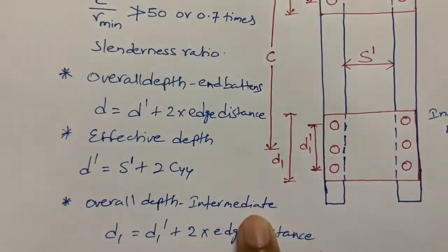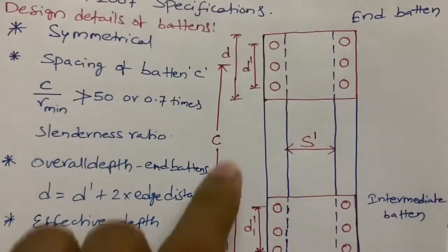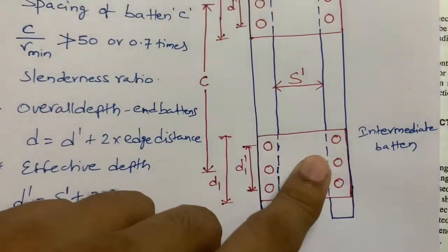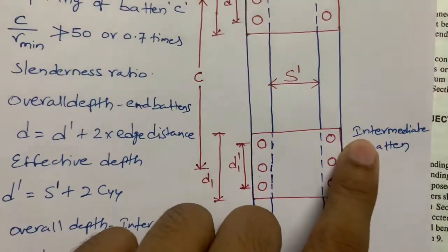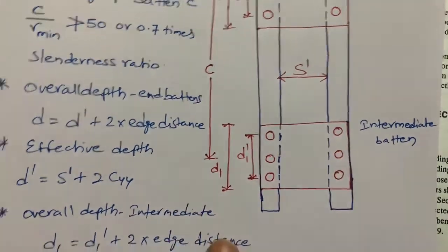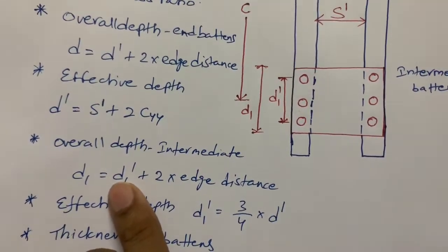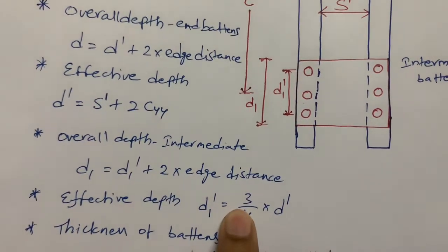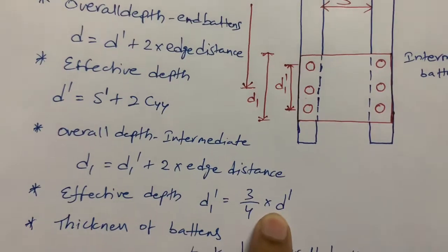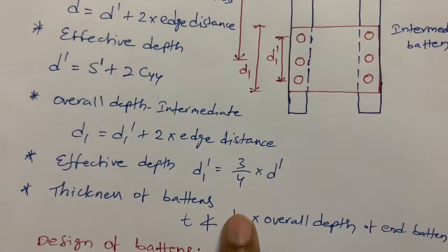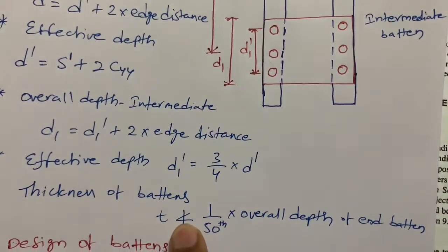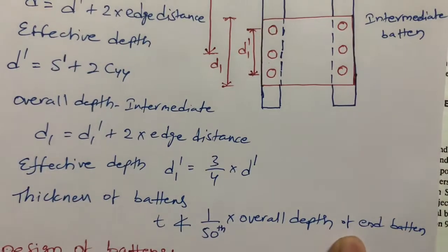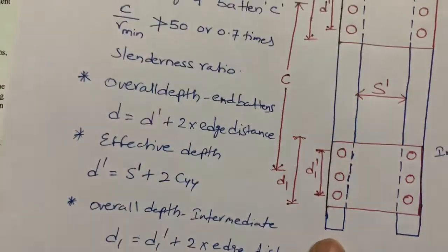Intermediate battens are the battens in between the two end battens. For intermediate battens, the overall depth d1 and effective depth d' — the code specifies the overall depth as three-quarters times d'. When it comes to thickness of the battens, the code specifies that the thickness t shall not be less than 1/50 times the overall depth of the end battens.